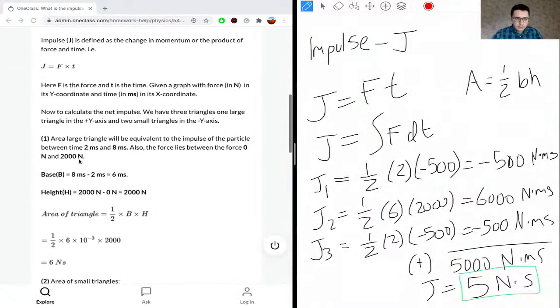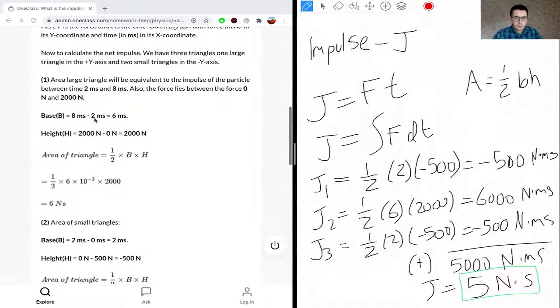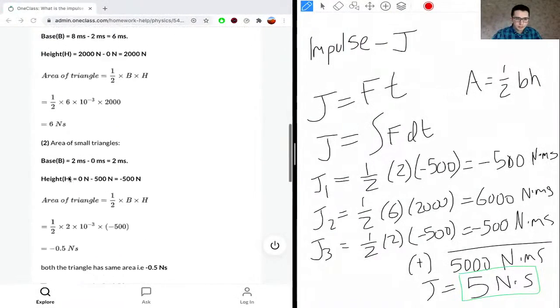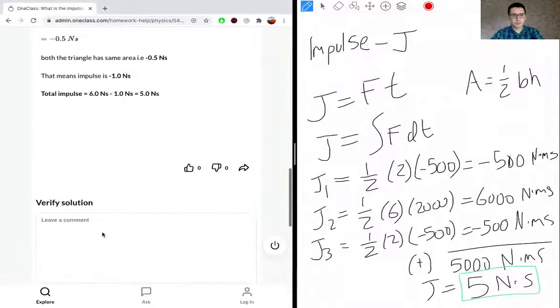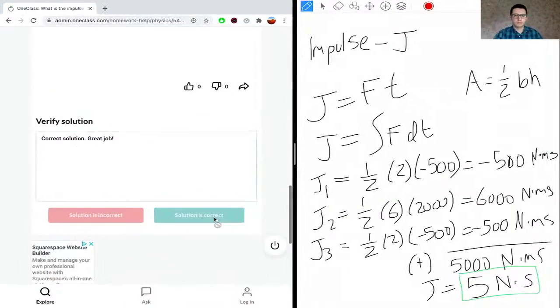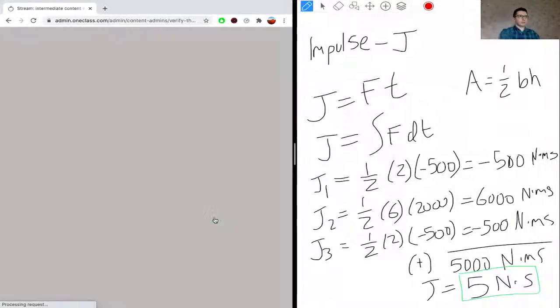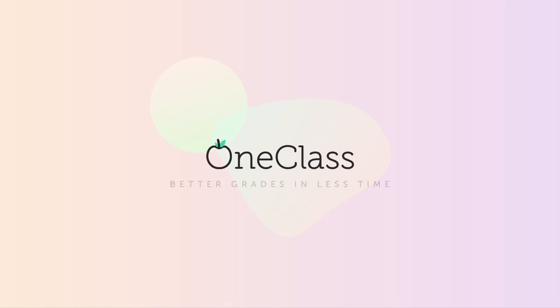They have the same equation, J equals Ft. They calculate the area of the triangles and get the final answer of 5 Newton-seconds. The solution attempted by the student is correct. Great job. Let's go to the next question. Thank you so much. We'll see you next time.